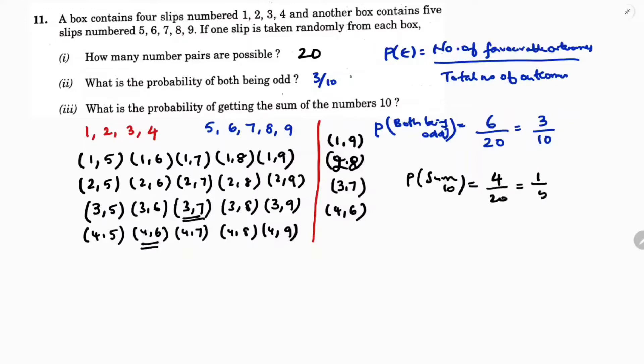Four out of twenty is nothing but one by five. So the probability of getting the sum of the numbers equal to ten is one by five.